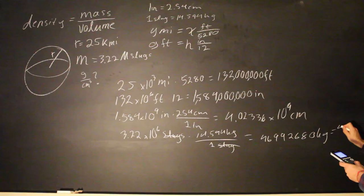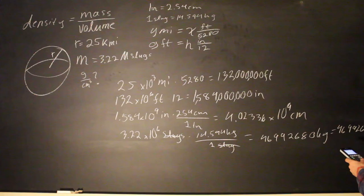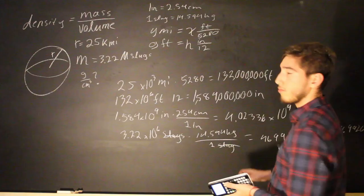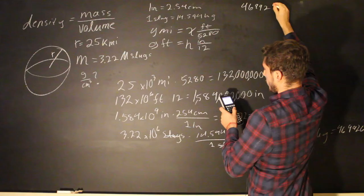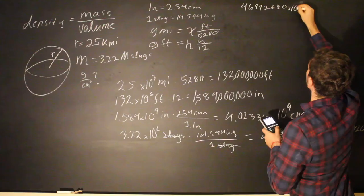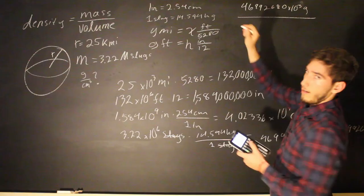Which is equal to 4.699268 times 10 to the tenth grams. So, we have the mass, which is 4.699268 times 10 to the tenth grams over the volume of the sphere.